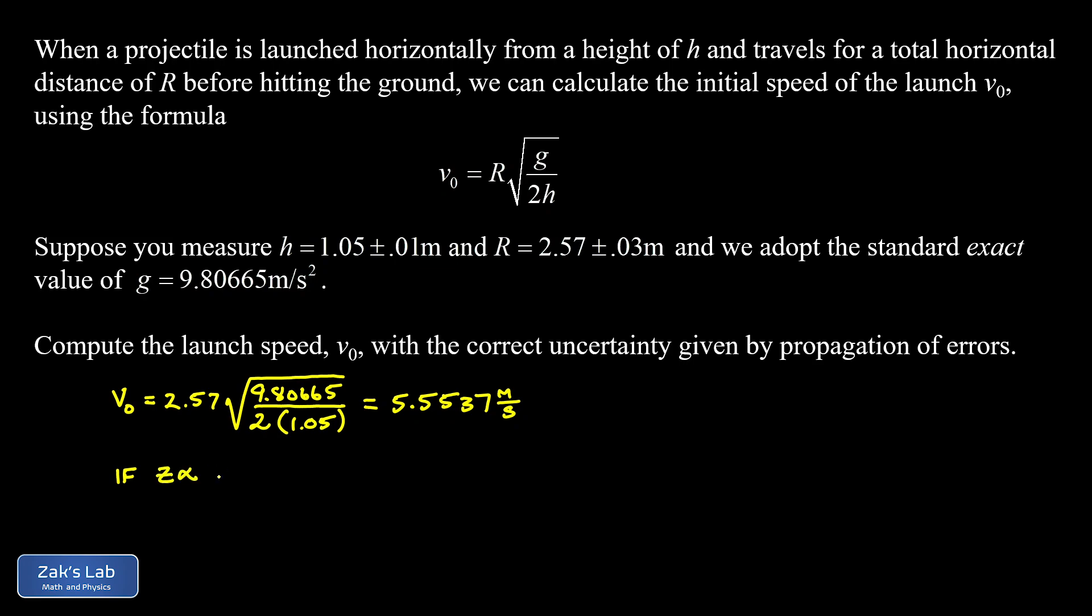If a variable z is proportional to one measured variable raised to an exponent, so x to the m power, and another variable raised to some other exponent, then you can write down the relative uncertainty in z. So that's the uncertainty in z divided by z itself. And that's going to be the square root of m times relative uncertainty in x, all squared.